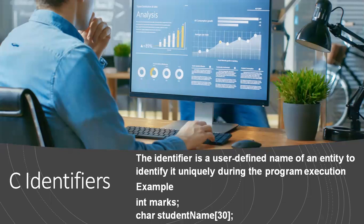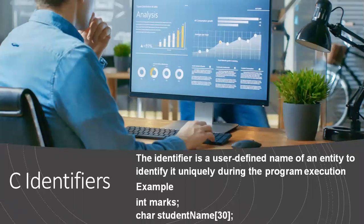In the C programming language, programmers can specify their name to variables, arrays, pointers, functions, etc. An identifier is a collection of characters which act as the name of a variable, function, array, pointer, structure, etc. In other words, an identifier can be defined as a user-defined name to identify an entity uniquely in the C programming language. That name may be the variable name, a function name, an array name, a structure name, or even a label.